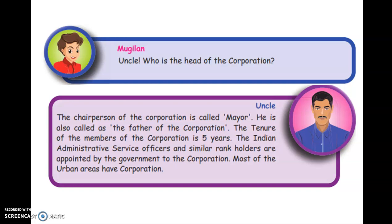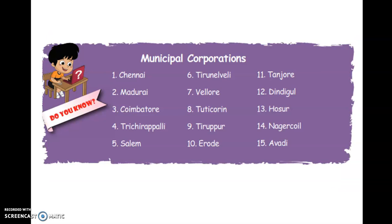Most urban areas have corporations. The 15 corporations in Tamil Nadu are: Chennai, Madurai, Coimbatore, Tiruchirappalli, Salem, Tirunelveli, Vellore, Thoothukudi, Tiruppur, Erode, Thanjavur, Dindigul, Hosur, Nagercoil, and Avadi.